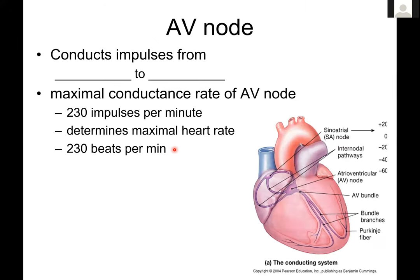The AV node conducts impulses from the atria to the ventricles. The ventricles are depolarized by the bundle branches in the interventricular septum and the Purkinje fibers for the walls respectively. The maximal conductance rate of the AV node — meaning how fast it can depolarize in a row — is 230 impulses per minute, which determines your maximal heart rate of 230 beats per minute. So if the SA node sets the rhythm, the AV node sets the upper limit for possible speeds.